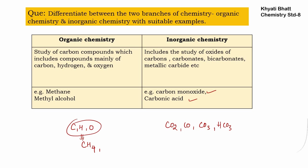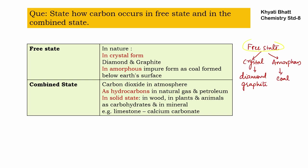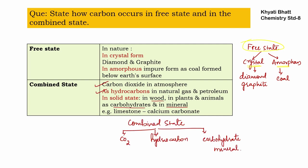Our next question is to state how carbon occurs in free state and in combined state. In free state, carbon occurs in two major forms in the Earth's crust: crystalline form and amorphous form. Examples of crystalline forms are diamond and graphite; amorphous forms include coal. In combined state, carbon occurs in the atmosphere as carbon dioxide, in natural gas and petroleum as hydrocarbons, and in plants, animals, and wood as carbohydrates and minerals.